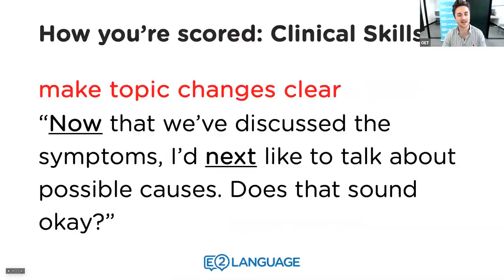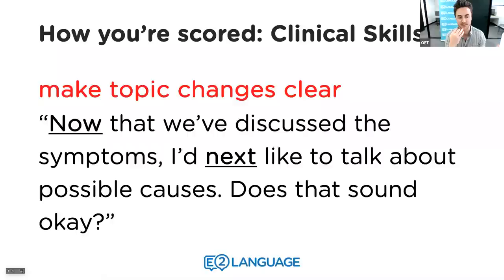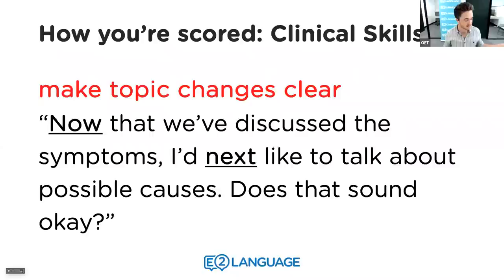Make topic changes explicit. Say something like: 'Now that we've discussed the symptoms, I'd like next to talk about possible causes — does that sound okay?' This signals a clear transition from task one to task two. It helps structure the role play for both you and the interlocutor, and shows the examiner you know which task you're on. Always ask if it's okay to proceed, and the patient will agree.